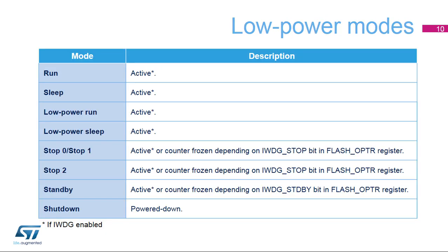The IWDG can be active in all running and low power modes, except in shutdown mode where it is powered down. Nevertheless, in stop 0, stop 1, stop 2, and standby modes, the watchdog counter can be frozen by programming the corresponding bits in the flash OPTR register.